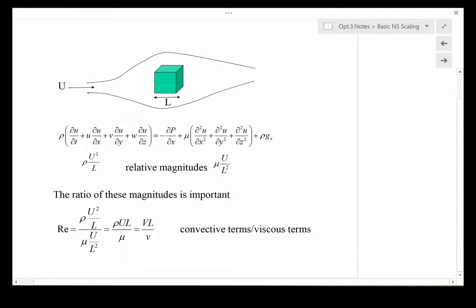If we were to look at how big the different terms are, we would find that the terms on the left are of magnitude rho·U²/L, where U is something called the free stream velocity. This is the velocity flowing over this object.